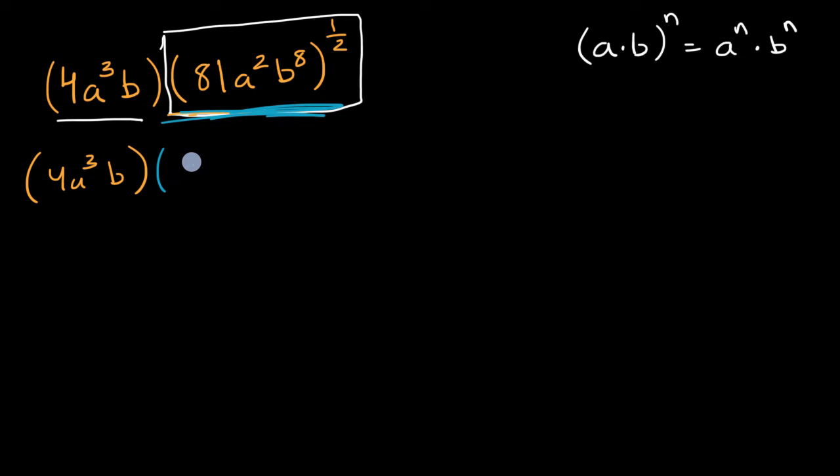So I'm raising all of this to the 1½ power. So this is times 81 to the 1½ power, times a² to the 1½ power, times b⁸ to the 1½ power. Let me write a little bit neater. All right, to the 1½ power.